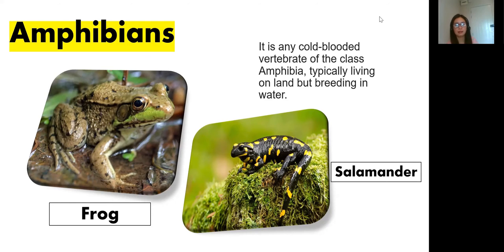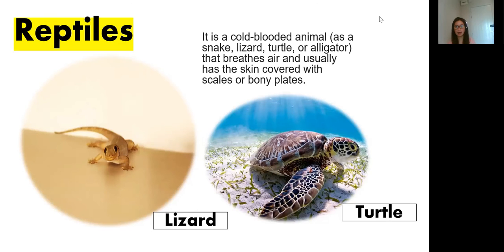Next is reptiles — please say the word: reptiles. Very good. A reptile is a cold-blooded animal such as a snake, lizard, turtle, or alligator. They breathe air and usually have skin covered with scales or bony plates.